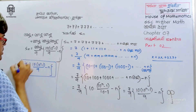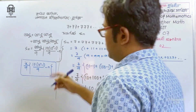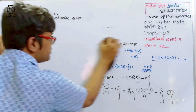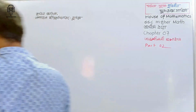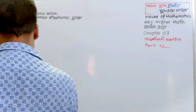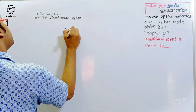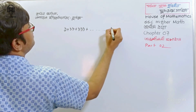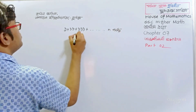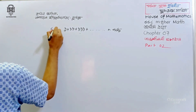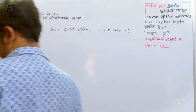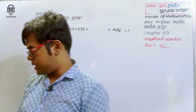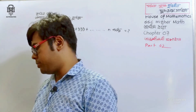So, we have the answer. The answer is 3 plus 33 plus 333, n terms. The answer is 3 by 9. Let us know the answer — alright? It is very important mathematics, a very important type. Let us know what this is.